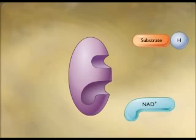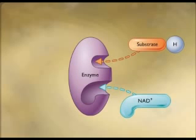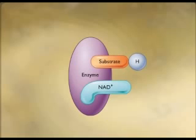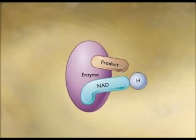During an oxidation-reduction reaction in the cell, an enzyme is involved in transferring the hydrogen — a proton plus electron — to a coenzyme called NAD+. This enzyme has a binding site for both the substrate and NAD+. Once the substrate and NAD+ are bound with the enzyme, the hydrogen is transferred from the substrate to the NAD+.